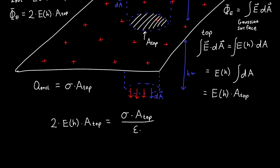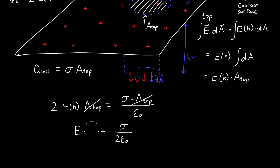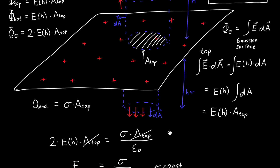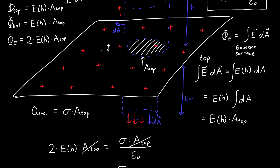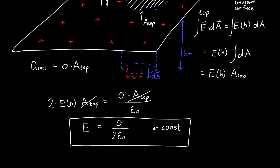Now we have everything to apply Gauss's Law. Plugging in: two times E(h) times A_top equals sigma times A_top divided by epsilon naught. The areas cancel conveniently. Dividing each side by two, we get E(h) = sigma over two epsilon naught. This is really interesting — it's not a function of h at all; it's a constant. It doesn't matter if we're a millimeter away or a million miles away from the plate — the electric field is the same. That's very unique to this infinite sheet of charge.